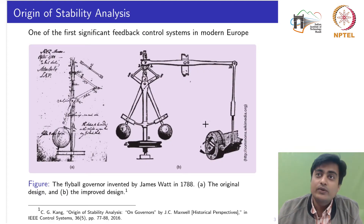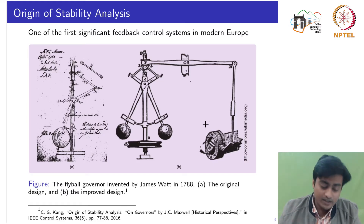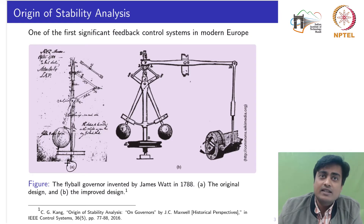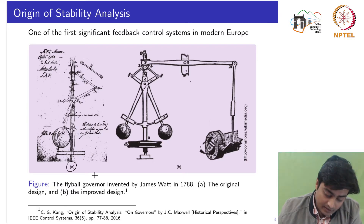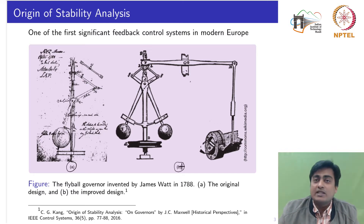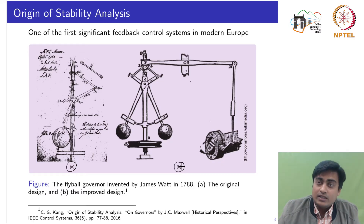Here in this picture you see the fly ball governor. On the left hand side, in figure A, this is the original design of the fly ball governor. Governors are devices used to control the motion of a machine — here the machine is basically the engine. In figure B you see the later improved design of the governor. The role of the governor is to control the speed of the engine.